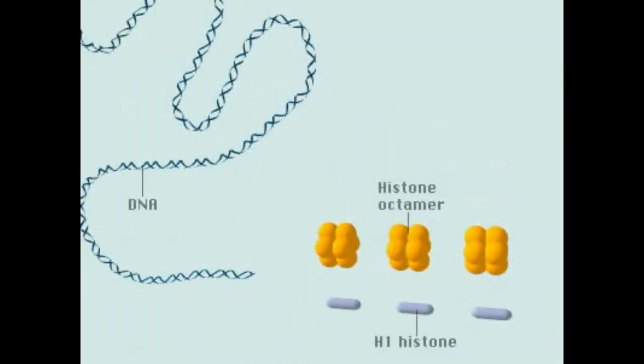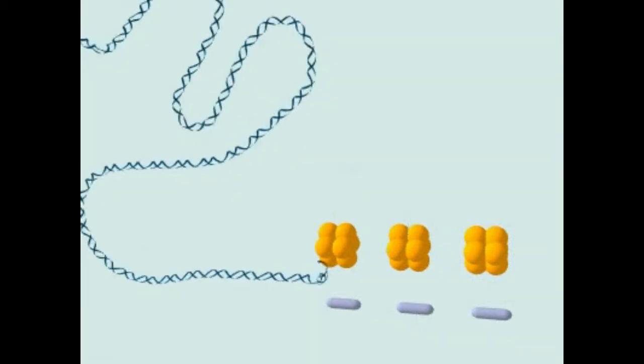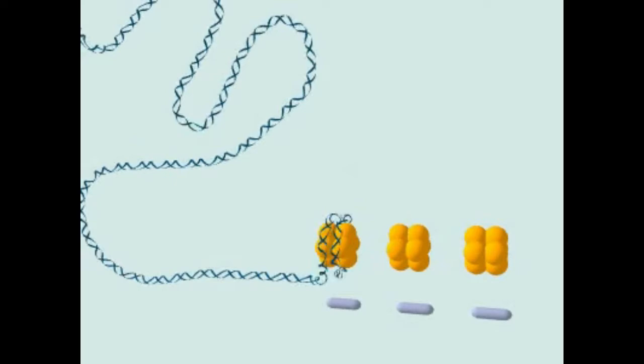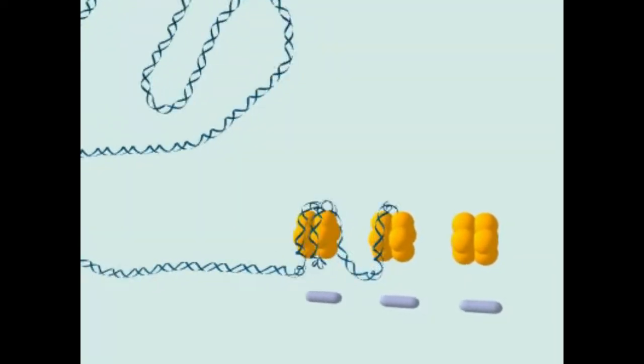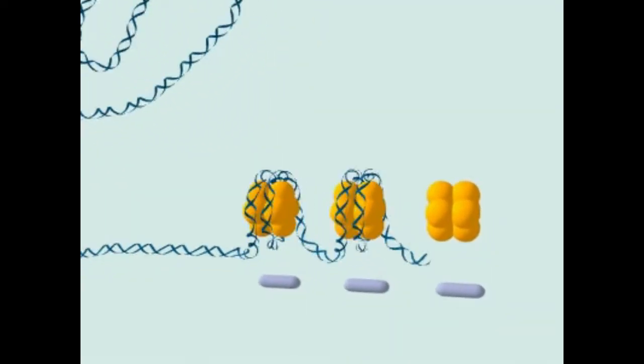A single very long DNA molecule is packed into one eukaryotic chromosome by progressive layers of coiling. First, DNA is spooled around histone octomers to form a chain of bead-like nucleosomes.